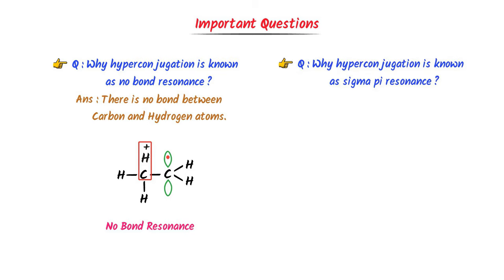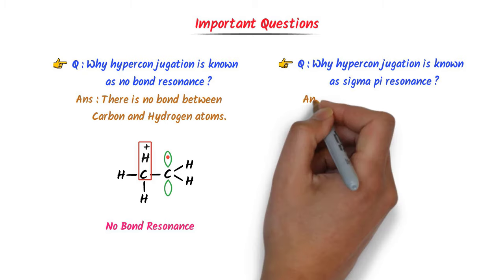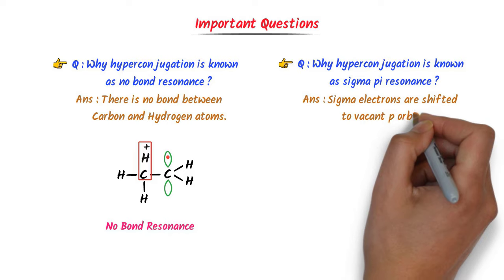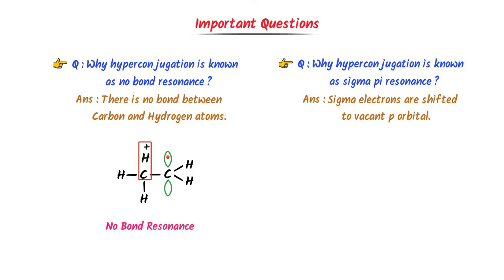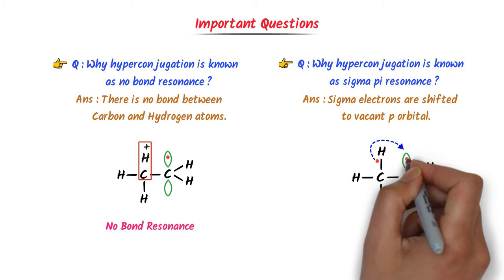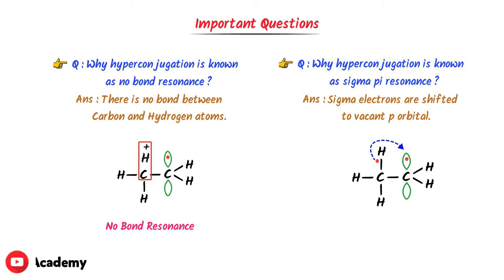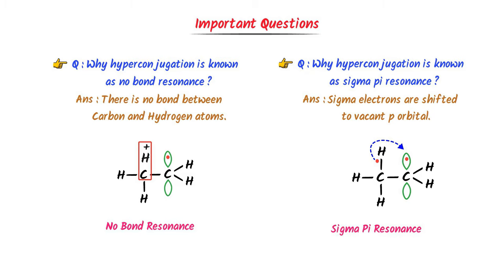Second: why is hyperconjugation also known as sigma-pi resonance? It is because sigma electrons are shifted to the p orbital or pi orbital. Consider this carbocation — the sigma electron of hydrogen is shifted to the empty p orbital of carbon. Due to this shifting of sigma electrons, resonance occurs. Therefore, hyperconjugation is also known as sigma-pi resonance or sigma-p resonance. Note down all these important questions.